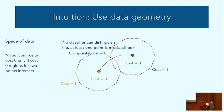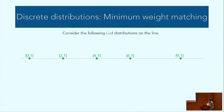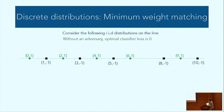This is a toy example with two points. Now consider a discrete data geometry where this is actually useful. Consider two discrete IID distributions on the line: green points are class one and black points are class negative one. It's a binary classification problem. Without an adversary, the optimal classifier loss is zero — a simple thresholding classifier achieves zero loss. Now consider an adversary with a budget of 0.55, creating balls around each point. The question becomes: what is the optimal loss in the presence of an adversary?